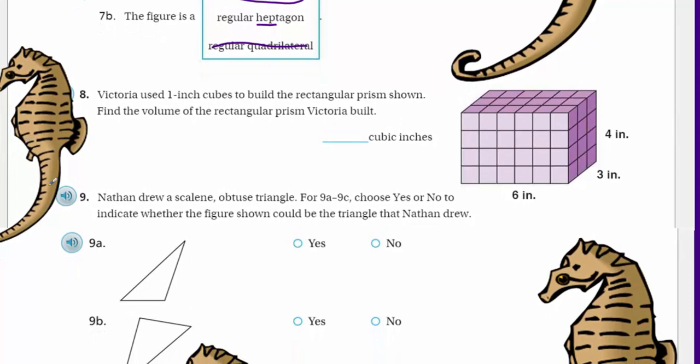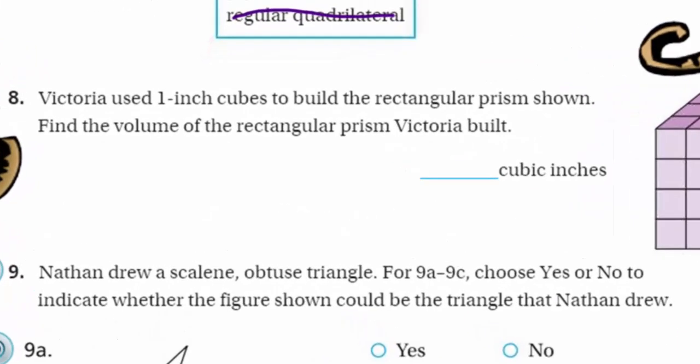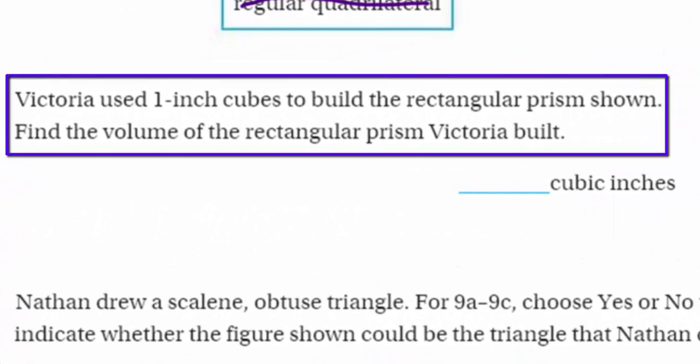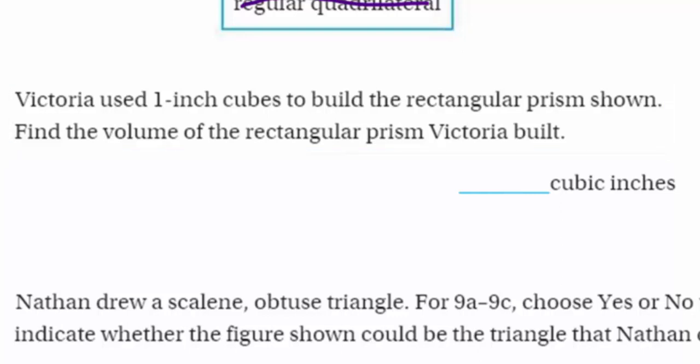Number eight: Victoria used one-inch cubes to build the rectangular prism shown. Find the volume of the rectangular prism Victoria built. Since we do know, and this is so important for the test, that length times width times height equals volume. And volume takes up space.